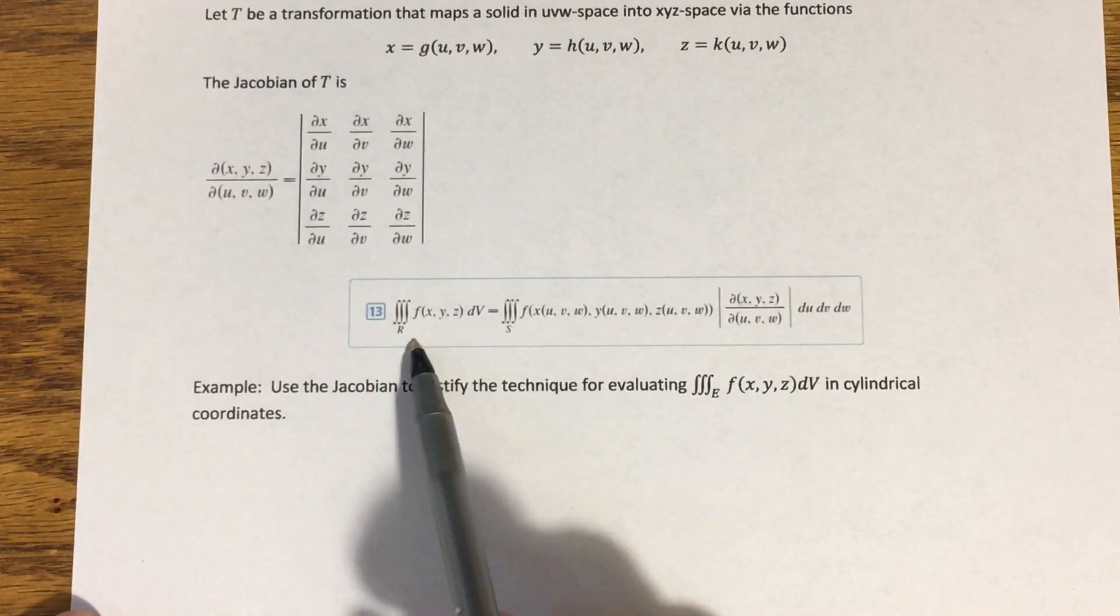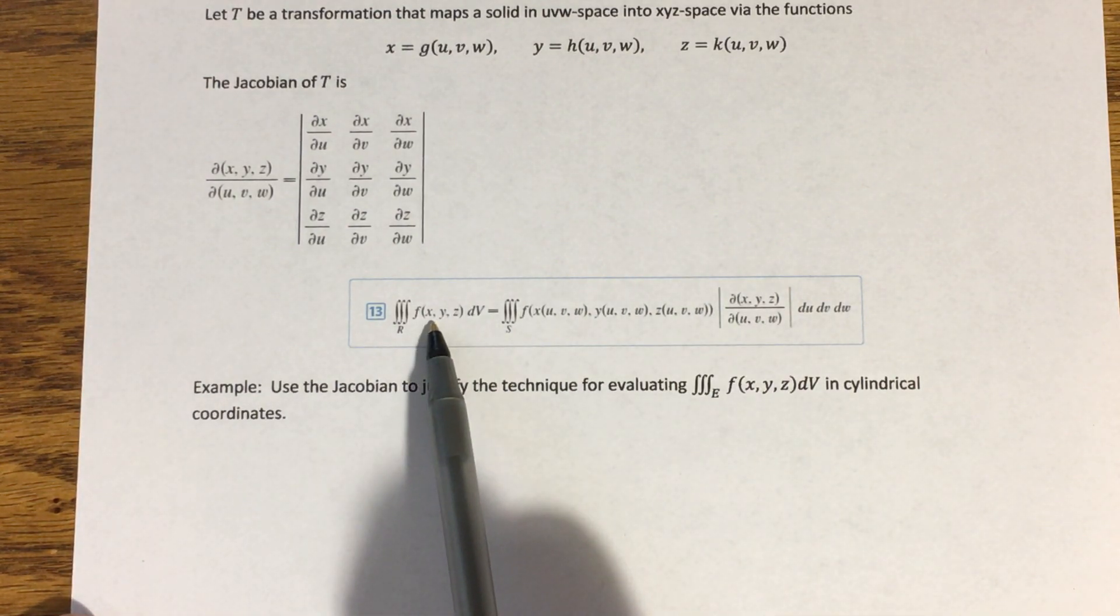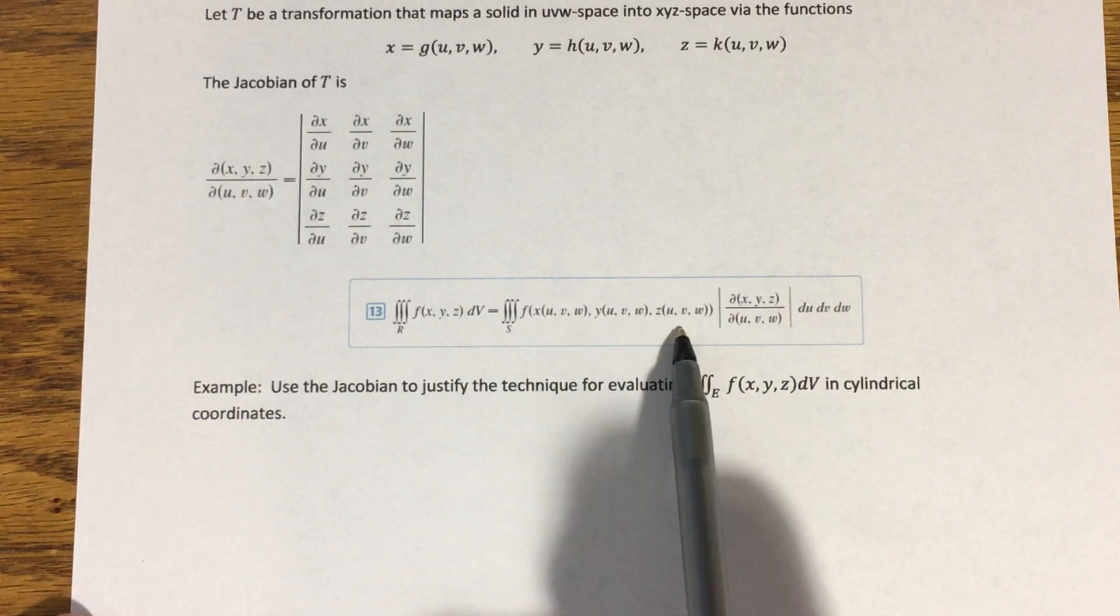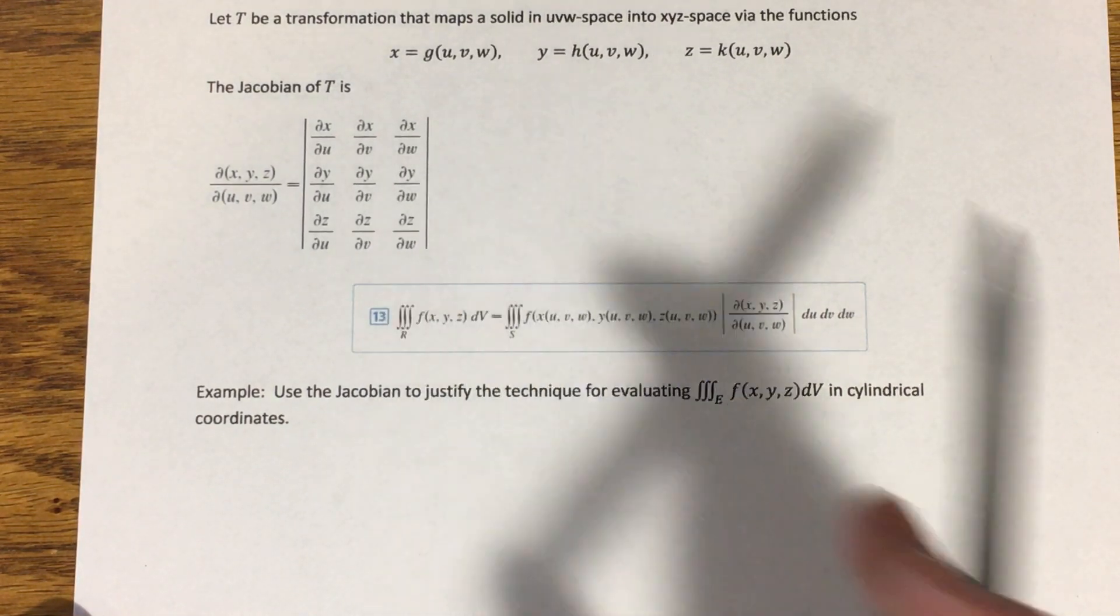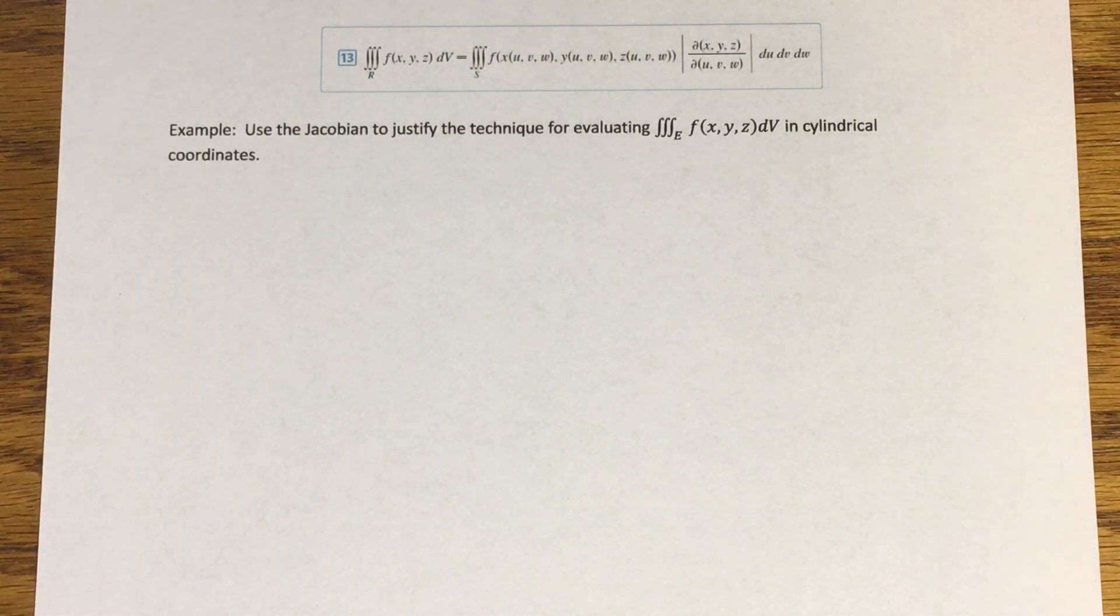So this is what we do if we need to evaluate a triple integral with a change of variables. Same idea, the x, y, and z become the functions of u, v, and w that give us each of those variables x, y, and z. And then we multiply that by the Jacobian that we find here. So I'm only going to do one example with this, and it's just going to be kind of like what we did previously where we confirmed our change of variables into polar coordinates using the Jacobian. I'm going to do the same thing for cylindrical coordinates. Your book will walk through a derivation, if you read through this section, of the conversion formula into spherical coordinates that we've already discussed using the Jacobian. So since that's already in your book, I wanted to talk about cylindrical.